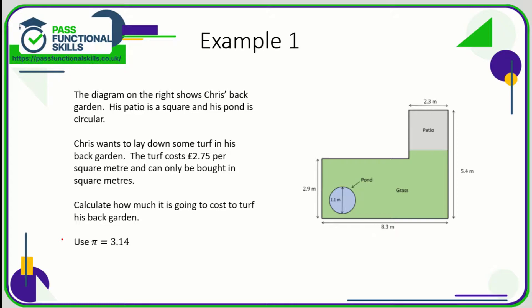Let's take a look at a few examples of problems with area and volume. So this is Chris's back garden. He only wants to turf the green bit, so what I'm going to do is work out the area of the full garden and then subtract the area of the patio and the area of the pond.